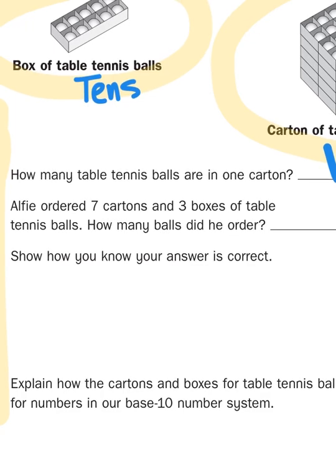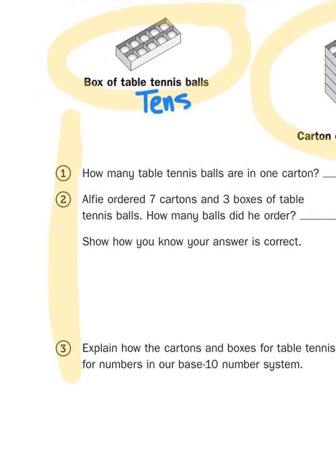So problem number two says, Alfie ordered seven cartons and three boxes of table tennis balls. How many balls did he order?